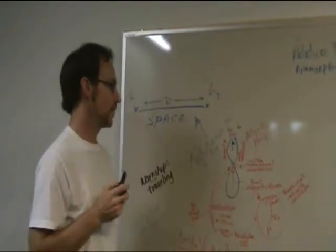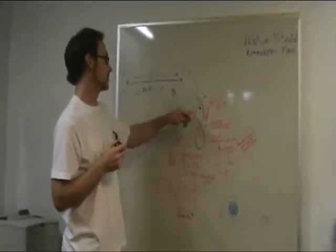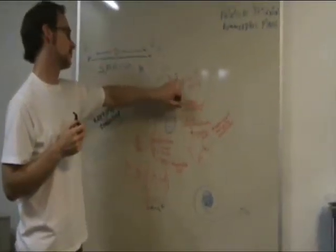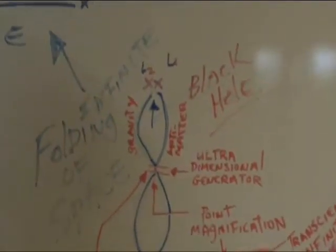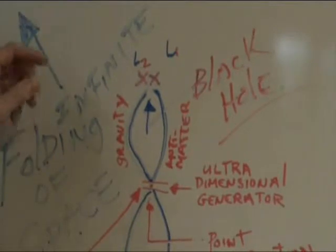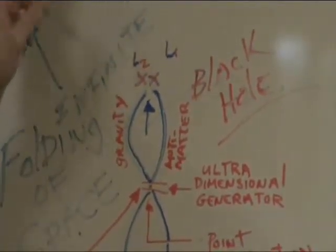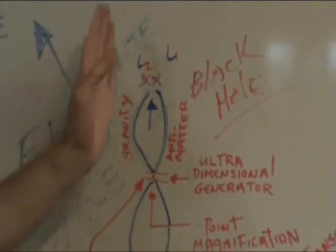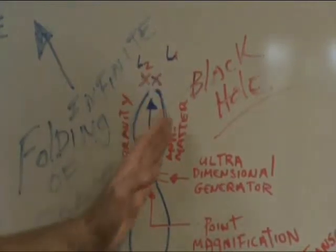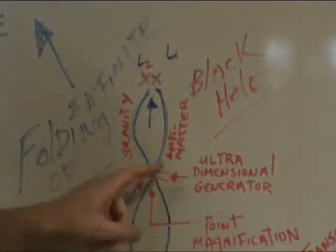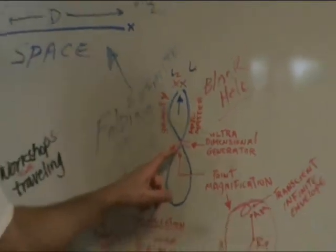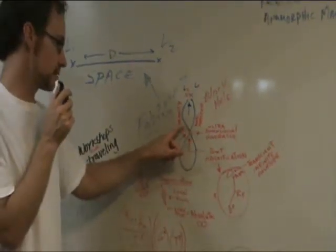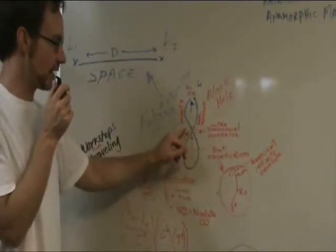The way that this works is you have location one and location two. These are kind of two points here. There's some antimatter that's created through this infinite loop crossing over through the ultra-dimensional generator. And it's coming around to across this point again.